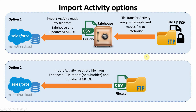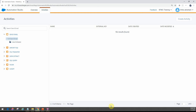The second option is usually not recommended because files are pretty unsecure on the FTP folder. Usually when we have transfers done, they're in encrypted and zip format because of the file size as well. So option one is the usual recommended approach, especially if you're keeping files on the FTP. But we do have the option to use the import activity to read directly from files placed in the FTP folder if they are not zipped or encrypted.